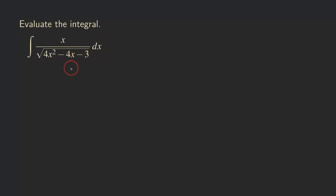So now you may say, what do we do then? The way that we do it is that we have to complete the square on this expression. If we complete the square on this expression, then we can actually turn it into an expression with just the quadratic term and the constant term. So let's try it.